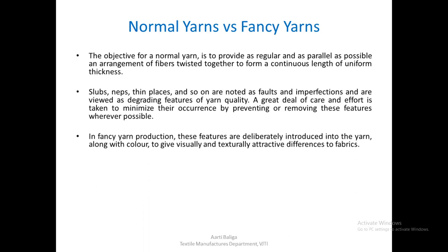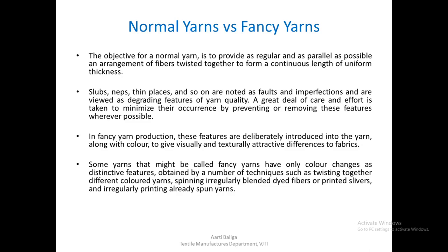In fancy yarn production, however, there is a difference: features viewed as faults in a normal yarn are deliberately introduced into the yarn, along with color, to give visually and texturally attractive differences to the fabric. Some yarns called fancy yarns have only color changes as distinctive features, obtained by twisting together different colored yarns, spinning irregularly blended dyed fibers, or even printing slivers or irregularly printing already spun yarns. Such color effects may be called a type of fancy yarn.